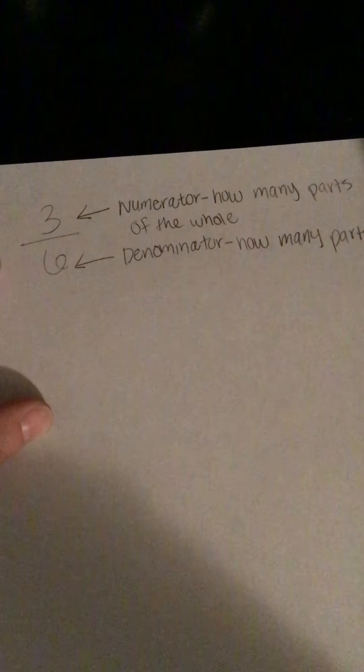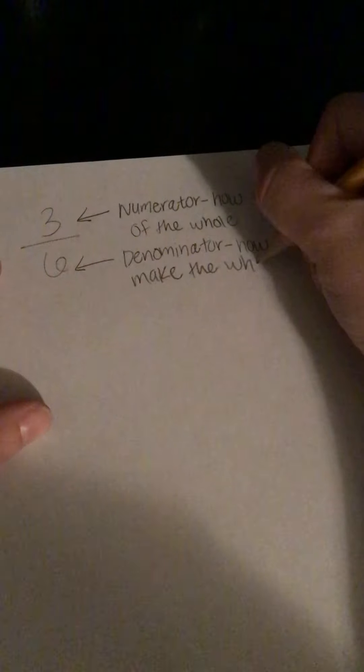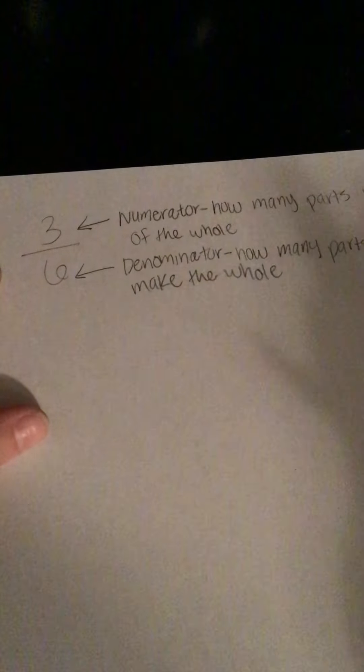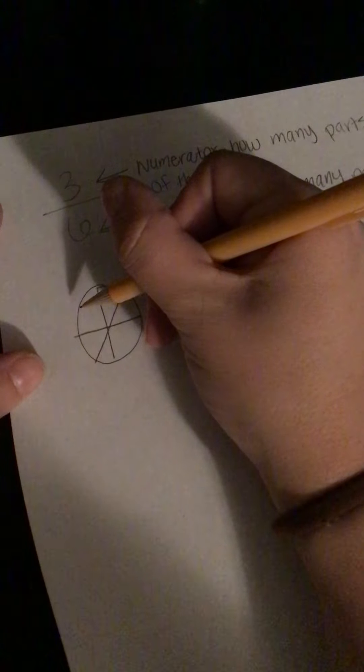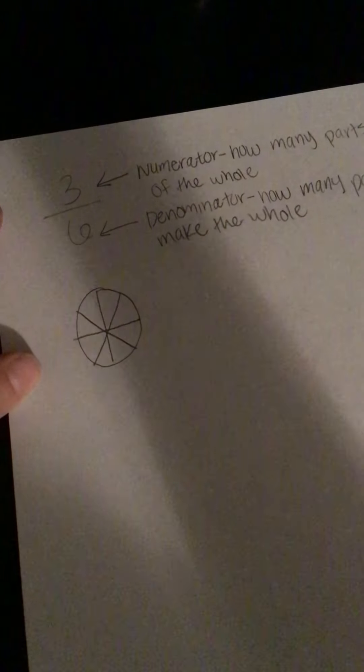Find a place in your math notebook to write this. The denominator — the bottom number — is how many parts you need to make the whole. The easiest way to think about fractions — and you'll hear me use this all the time because I love food — is pizza. It's easy and it's something that everybody can relate to.